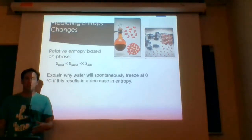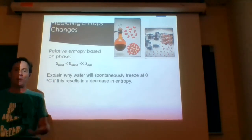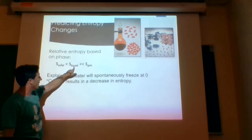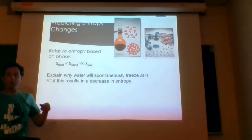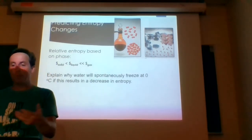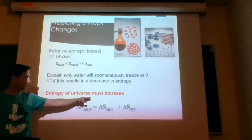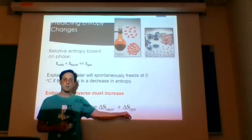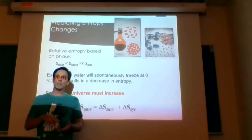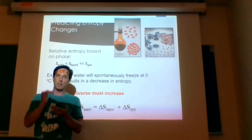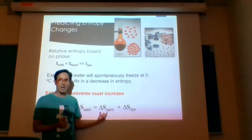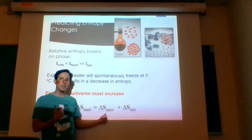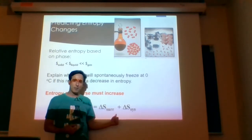If the universe always increases entropy, how can we say water will spontaneously freeze below zero degrees Celsius? When liquid water converts to solid ice, the entropy decreases. Well, water in the container is the system — we lower the entropy of the system going from liquid to solid — but freezing is also an exothermic process. The heat released to the surroundings causes molecules to move more randomly, increasing the entropy of the surroundings by more than the system decreases, so delta S for the universe remains positive.